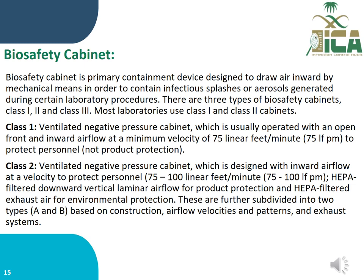Class 1 is a ventilated negative-pressure cabinet, usually operated with an open front and inward airflow at a minimum velocity of 75 linear feet per minute. It protects personnel but does not provide product protection.